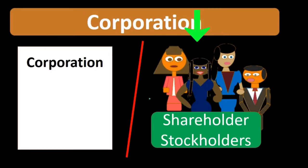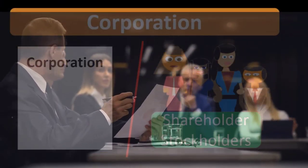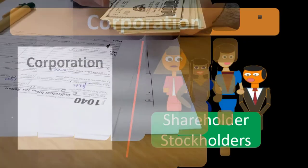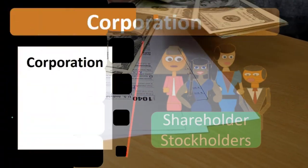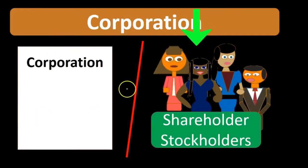One of the problems with the corporation, however, is that because it has its own legal rights to ownership, it also has responsibilities — one being the payment of income taxes. Corporate income tax is typically taxed at the corporate level, and then if a distribution is made in the form of dividends, that could be taxed again at the shareholder level. This is one of the problems with a corporation: it can result in double taxation.